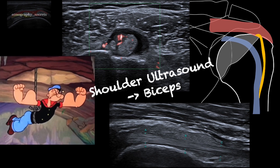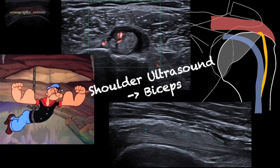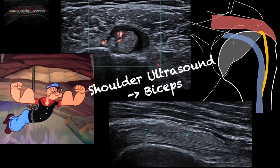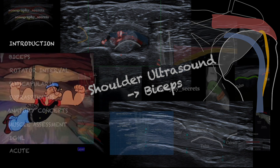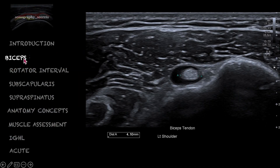The biceps tendon represents the starting point for most ultrasound assessments of the shoulder. It's an intra-articular tendon and therefore provides a fantastic window to the glenohumeral joint and, as such, the rotator cuff. However, there are a number of overlooked and misunderstood aspects to its assessment.